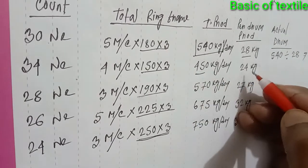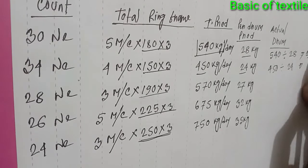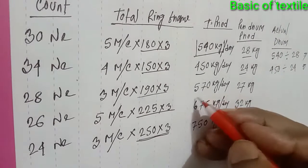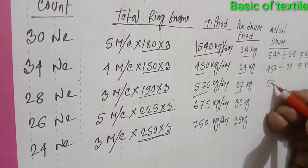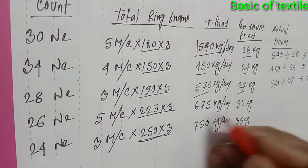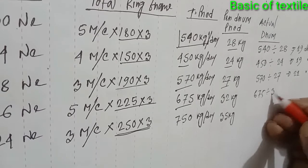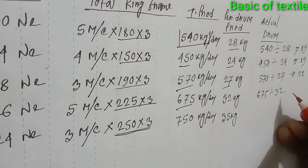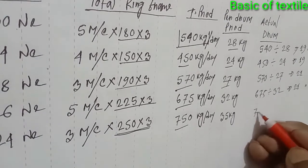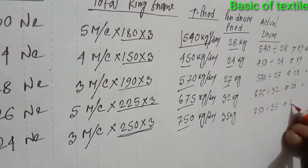450 divided by 24 — drum will be 19 drums. 570 divided by 27 — drum will be 21 drums. 675 divided by 32 equals 21 drums. 750 divided by 35 — drum will be 22 drums.